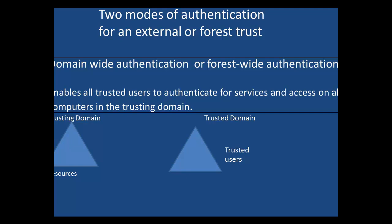Here we have two domains. The first domain on the left is the trusting domain — the domain that contains the resources, the files, the folders that the trusted domain needs to have access to. The trusted domain is the domain with the users that need to access the resources over in the trusting domain on the left.